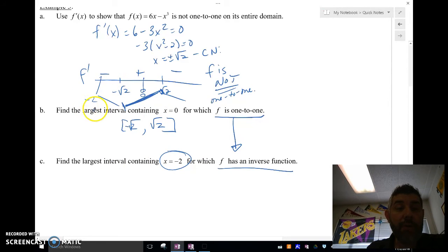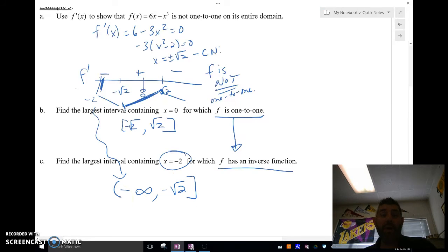Well, negative 2 is right there. So right in that interval is exactly where we have a monotonic function, which is always decreasing between negative infinity and negative root 2. So negative infinity and negative square root 2.